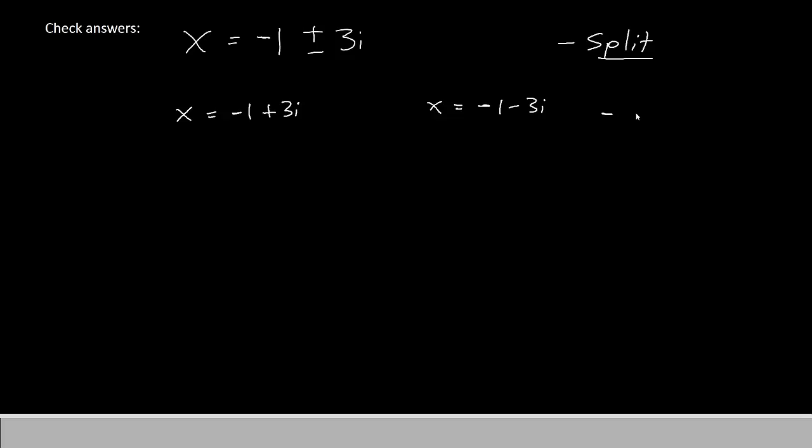Our final step to write the final answers in the way that your instructors are going to want them is to move everything that's on the right over to the left. That means for the first X, we will add 1 to both sides and subtract 3i from both sides. To our other X, we will add 1 to both sides and add 3i to both sides.